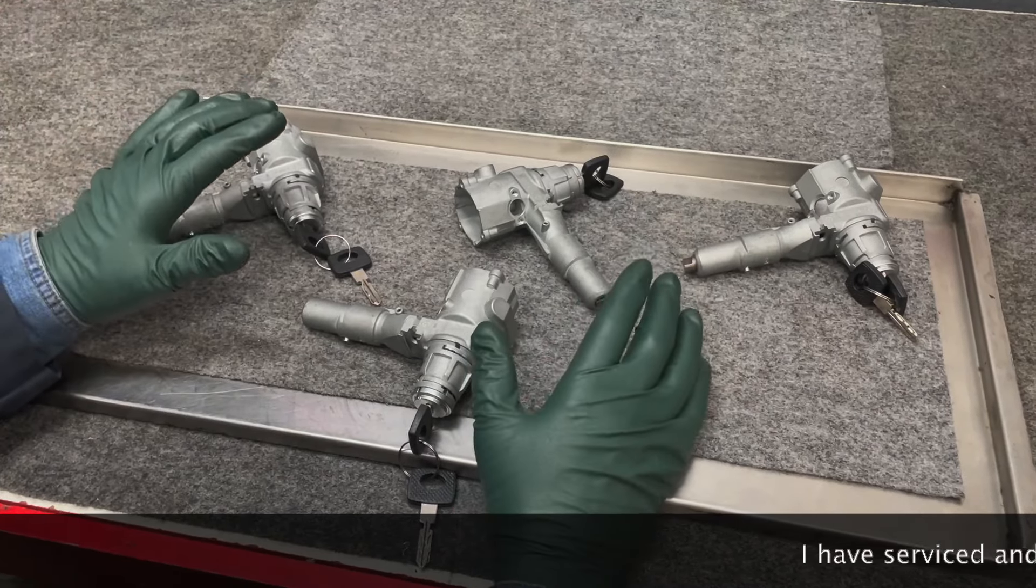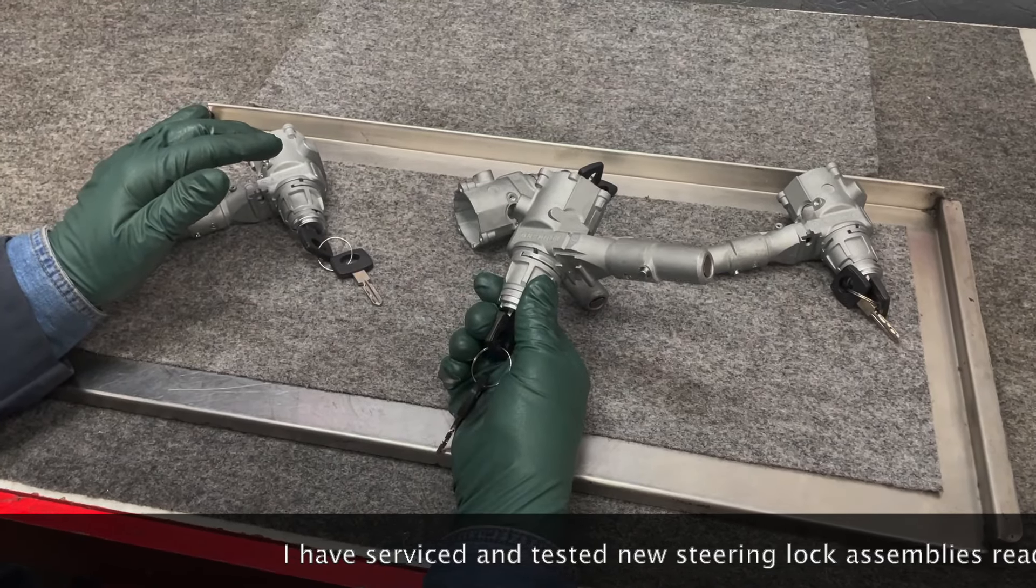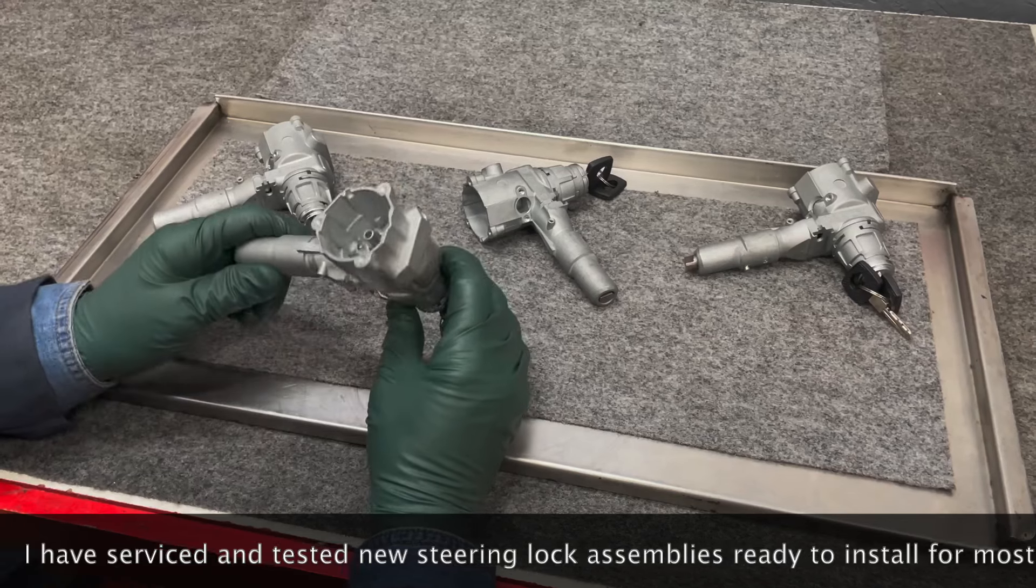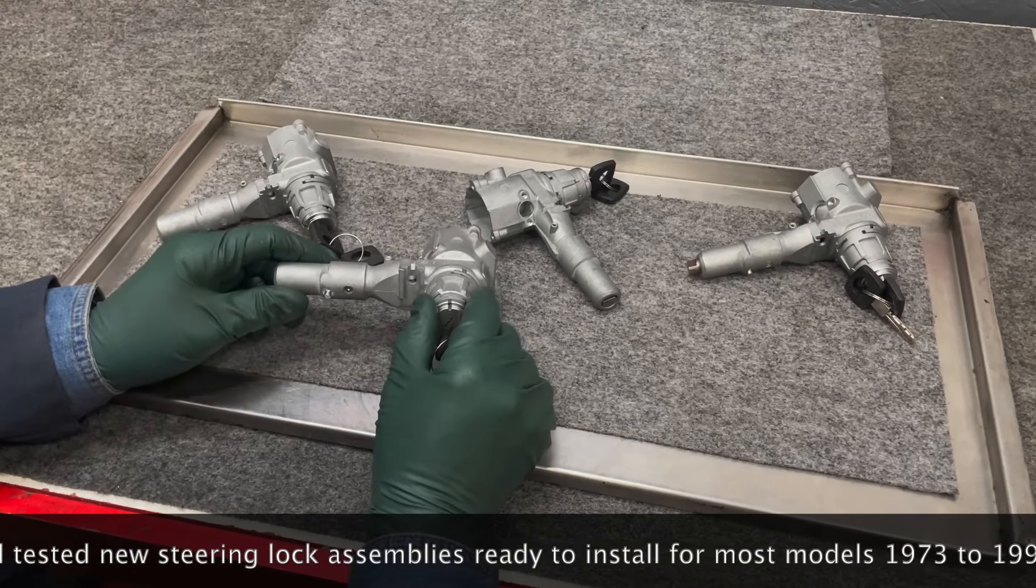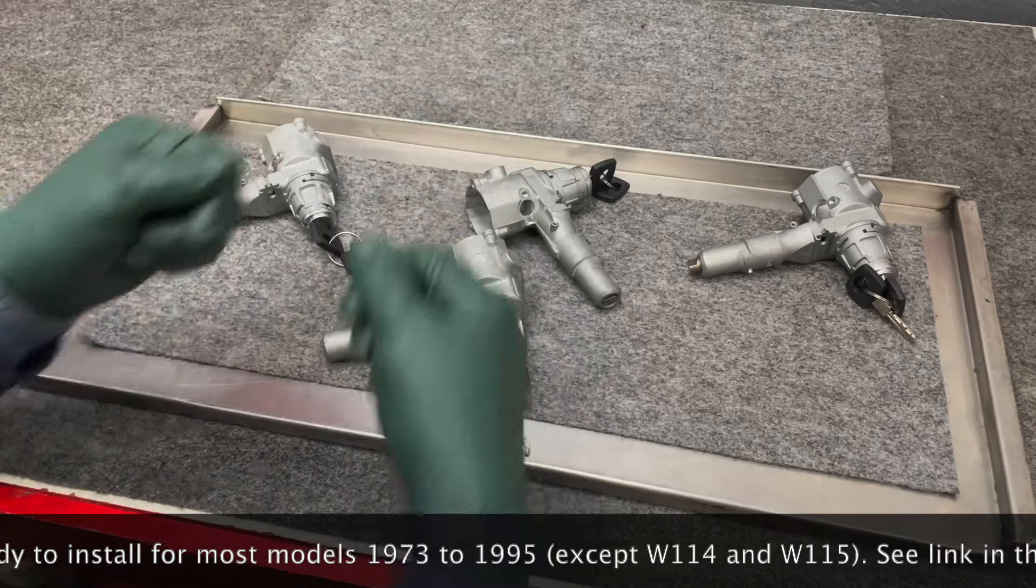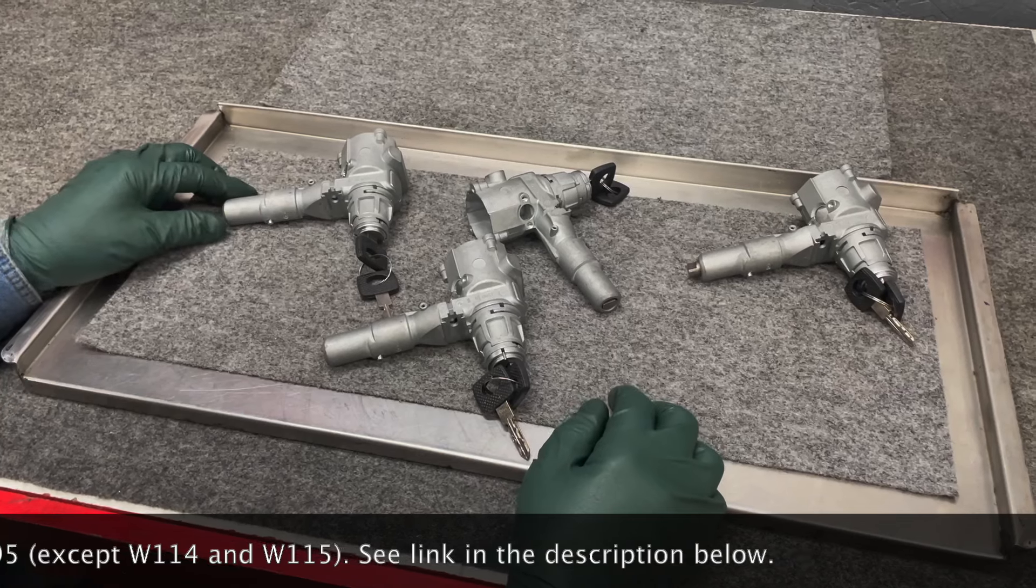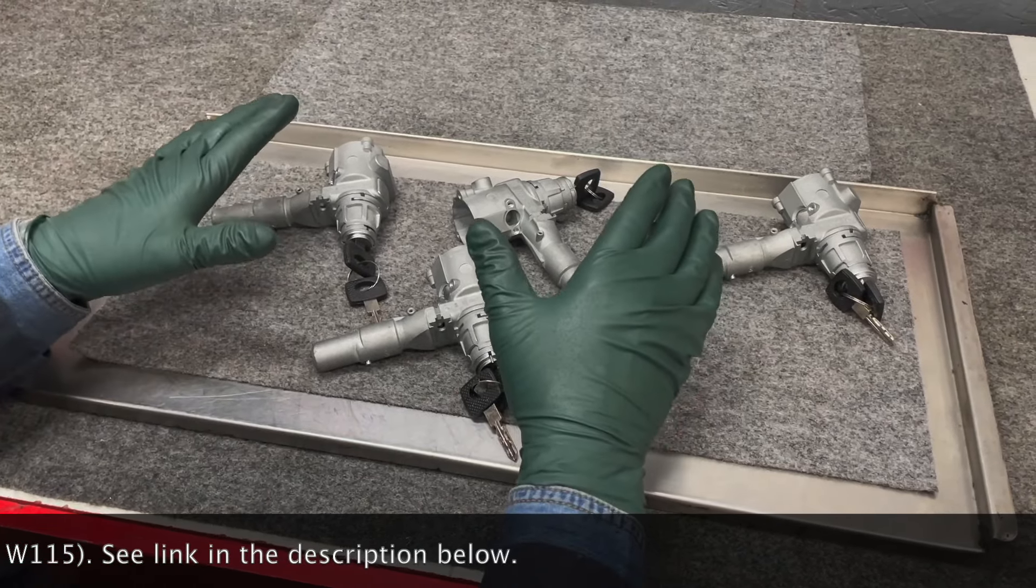Mercedes did not want their cars to get stolen so they came up with a steering lock and ignition lock assembly that would make it almost impossible. You see these movies where guys get into the dash, rip the wires out and spark it. That's not going to happen with these old Mercedes, but these cars are getting old and these are wearing out.